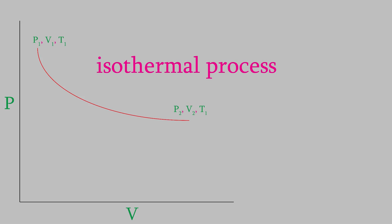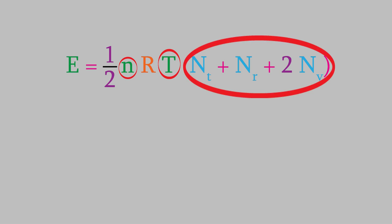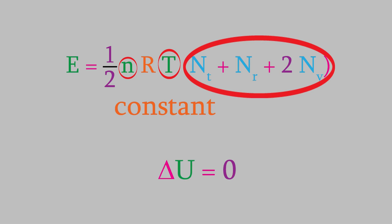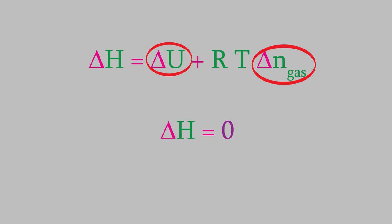First, let's look at the energy. From video 14, we saw the equation for the energy of an ideal gas, featuring the number of moles, the temperature, and the degrees of freedom in our molecules. In our situation, all of these things are constant — the number of moles and degrees of freedom don't change, and since this is an isothermal process, T is constant too. That means the energy won't change, so ΔU is zero. Meanwhile, we have the equation for the enthalpy. Since ΔU is zero and the number of moles of gas aren't changing, ΔH is equal to zero too. So for an isothermal process, both the change in energy and enthalpy are zero.